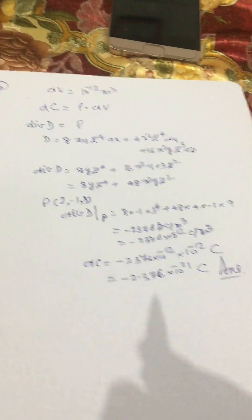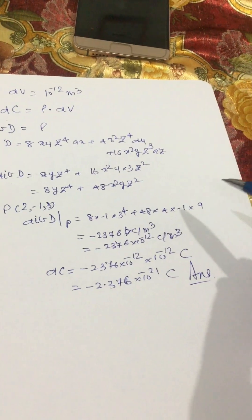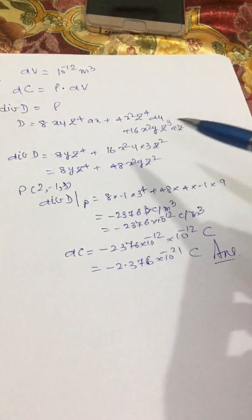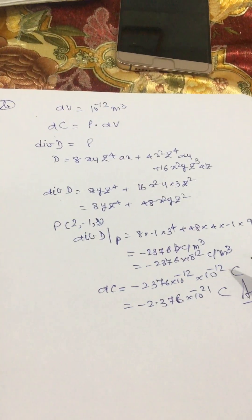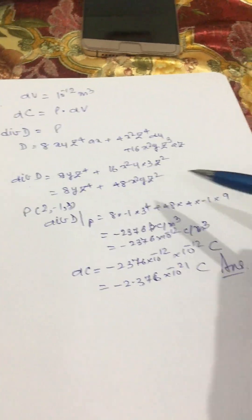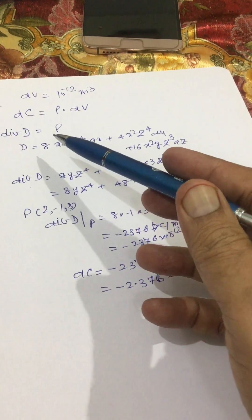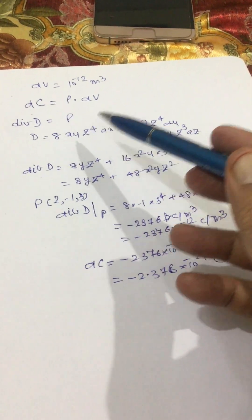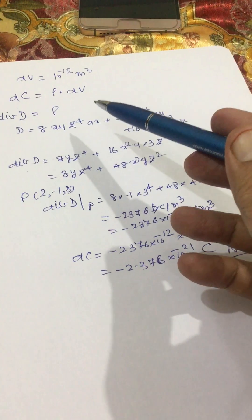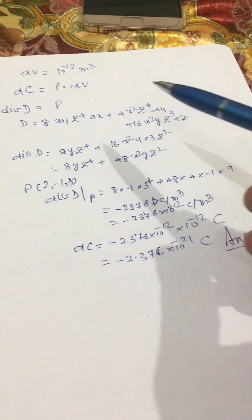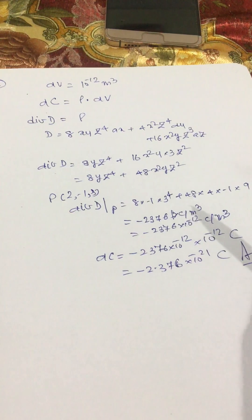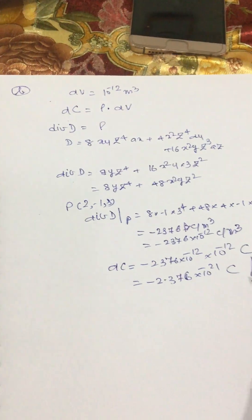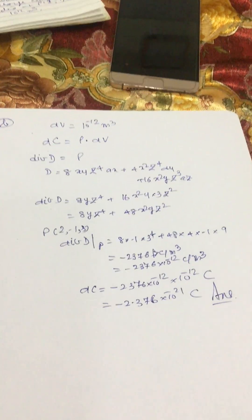So, dear friends, by using this divergence property we can calculate the flux density, flux, as well as the charge contained in this sphere. You should remember the divergence of any flux density function gives charge density in coulomb per meter cube. This is how we can calculate these two parts. Dear friends, thank you very much. Kindly subscribe to my channel.